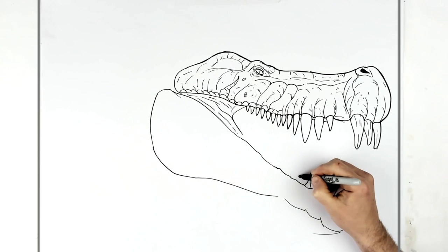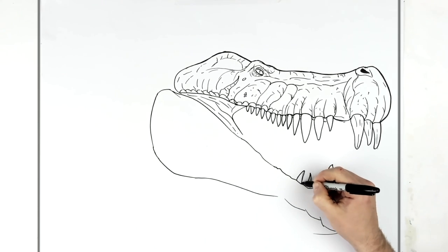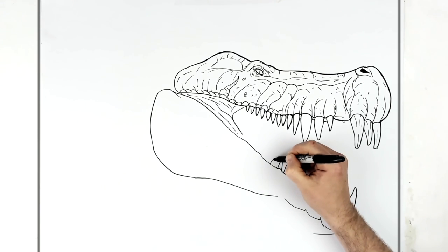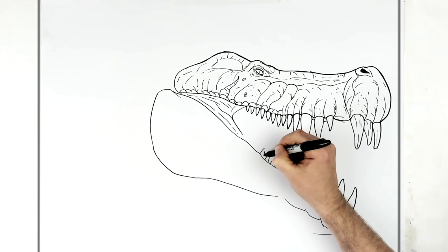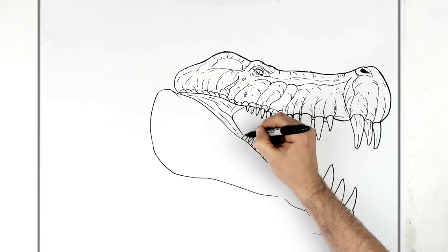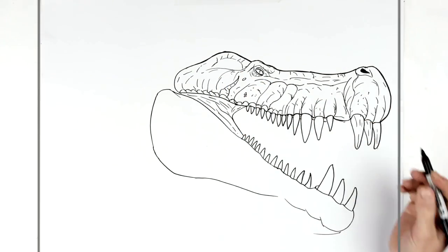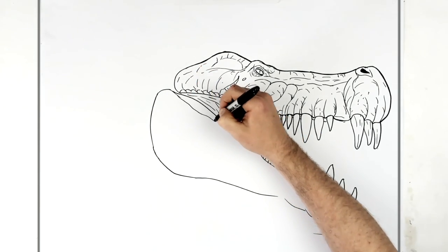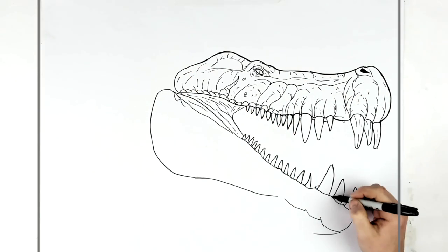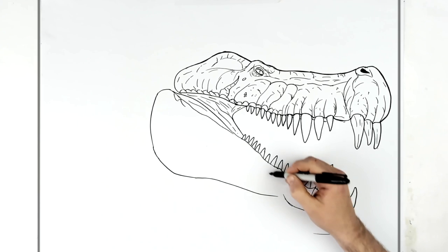Lots of these teeth now. You can make them kind of roundish — you don't have to make them sharp. And then he's got like another sort of layer here, and then like all these lizard bumps and stuff, like we did along his top lip. All these texture lines and bumps that come along here.